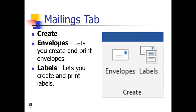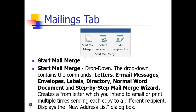Here are the types or parts of the Mailings tab. First, Create Envelopes lets you create and print envelopes. Labels lets you create and print labels. Under Start Mail Merge there is a Start Mail Merge drop-down.